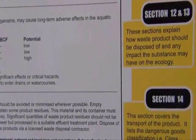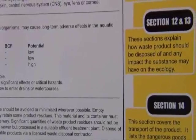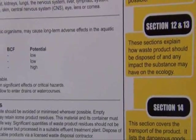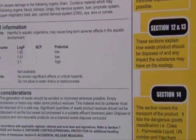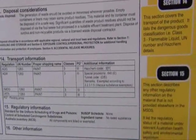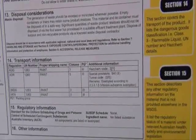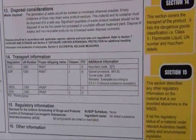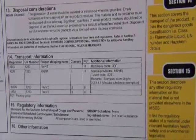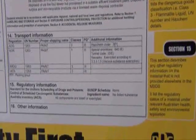Sections 12 and 13 explain how waste products should be disposed of and any impact the substance may have on the ecology. Section 14 covers the transport of the product. It lists the dangerous goods classification, flammable liquid, UN number, and hazchem details.